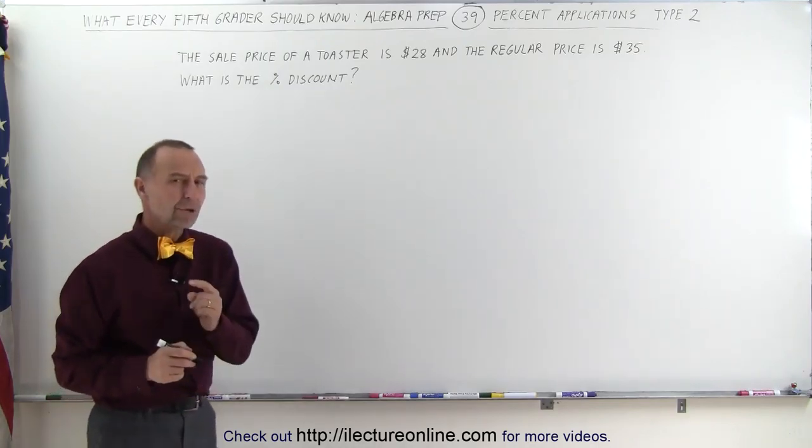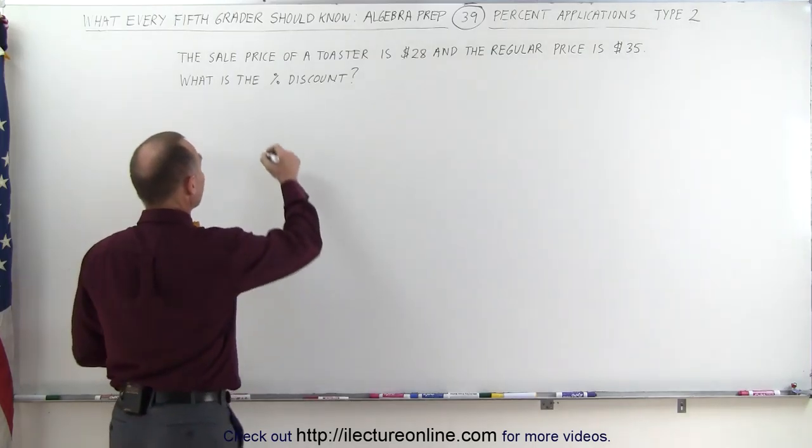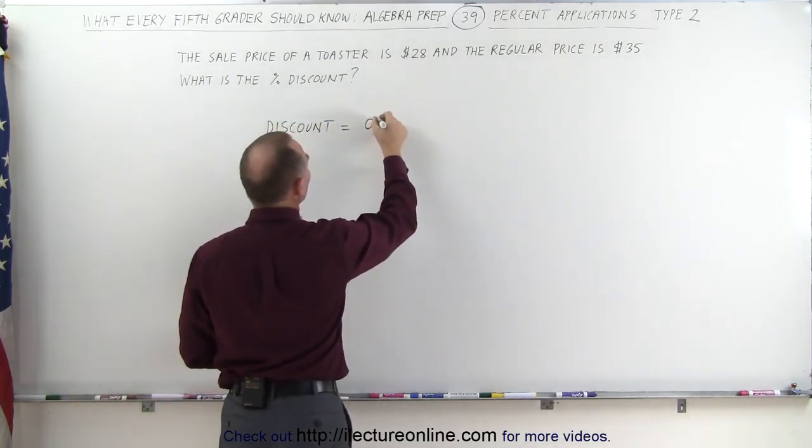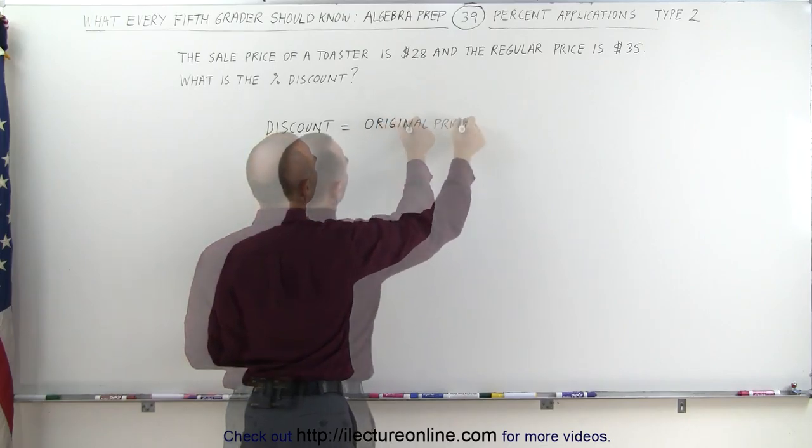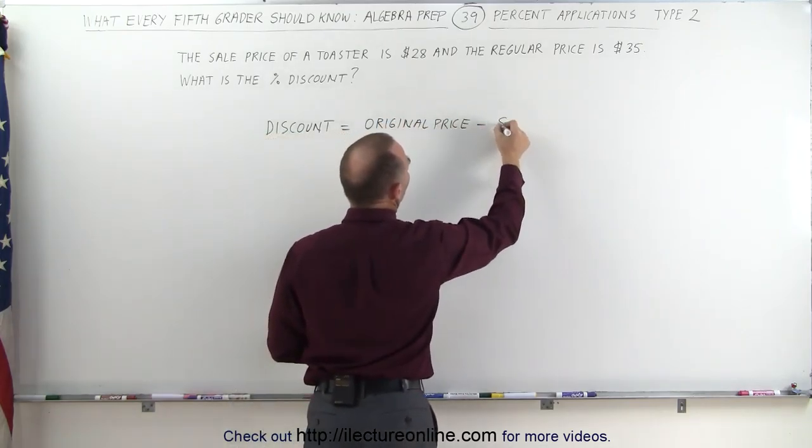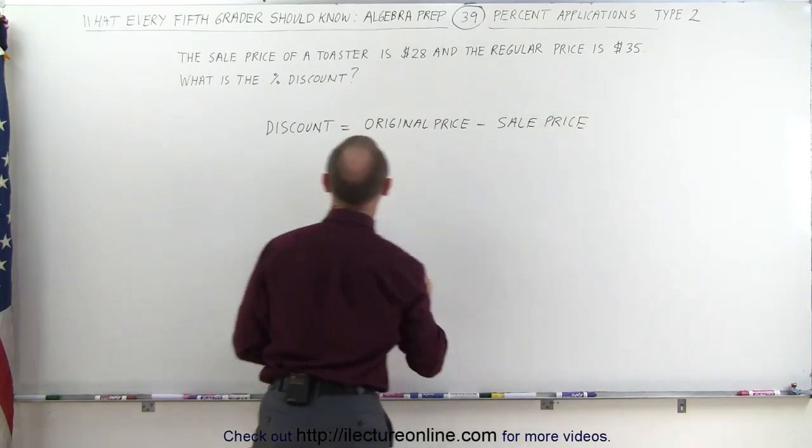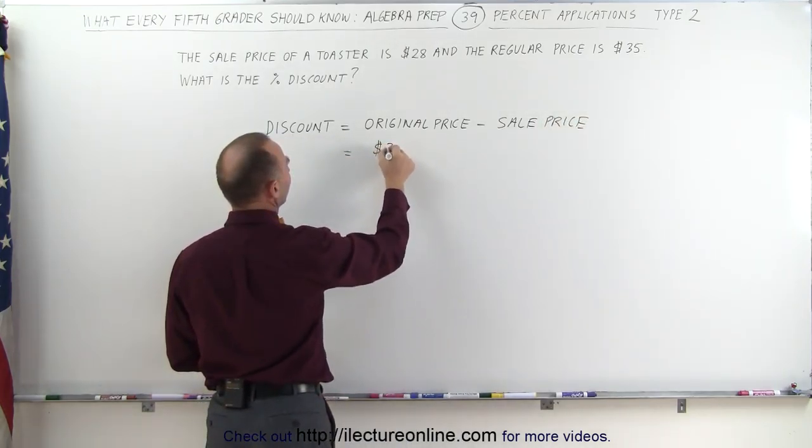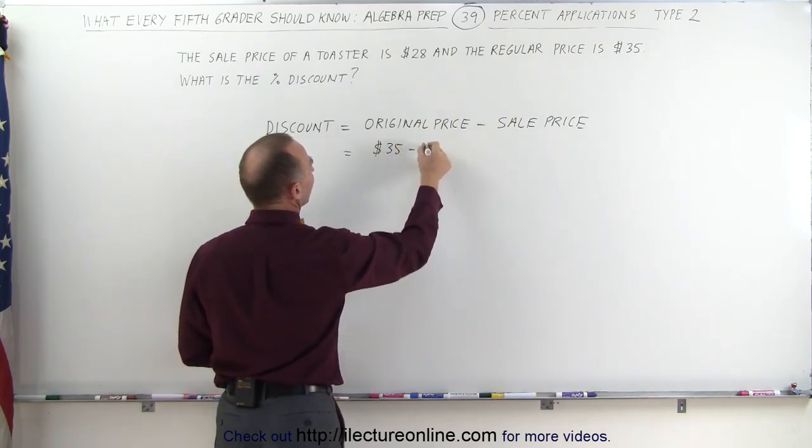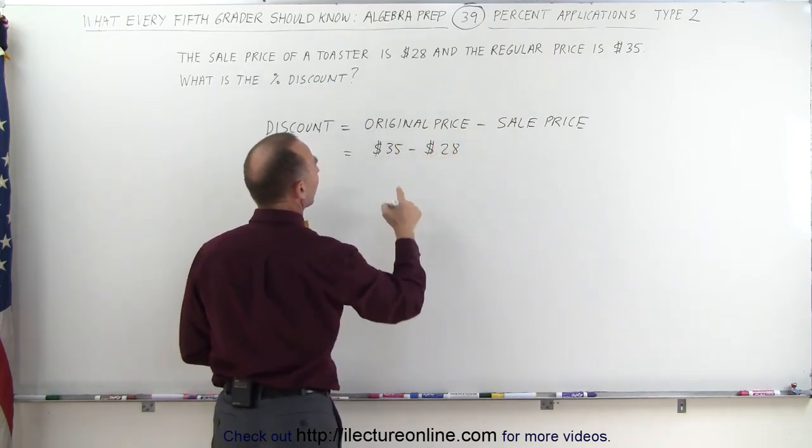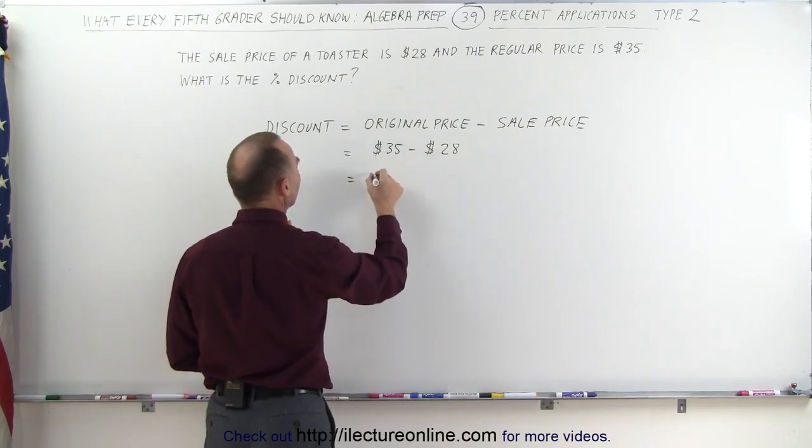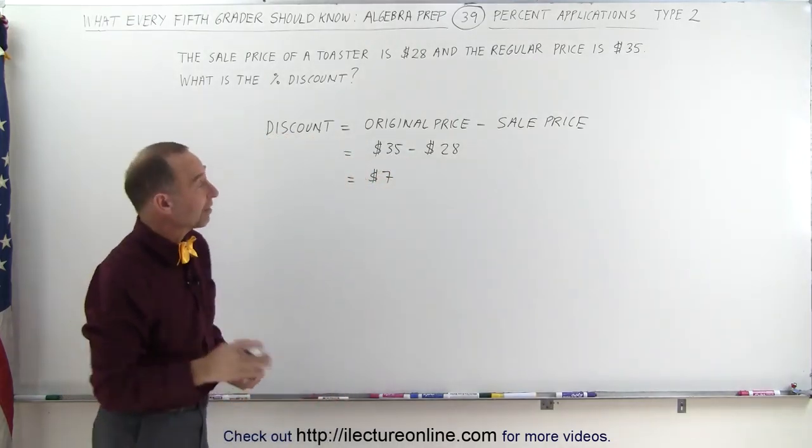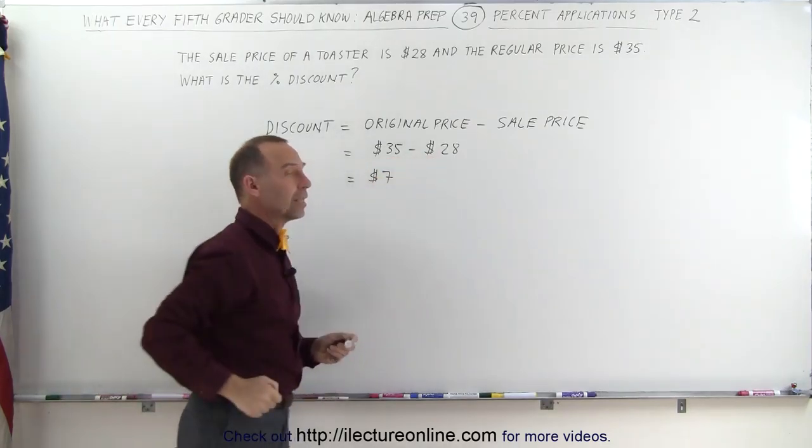The first thing we want to do is calculate the discount itself. The discount is equal to the original price minus the sale price. If we plug in those two numbers, the original price was $35 and the sale price was $28. The difference between those two is $7, which means the toaster was discounted by $7 from $35 down to $28.